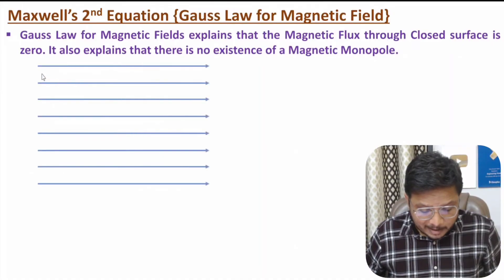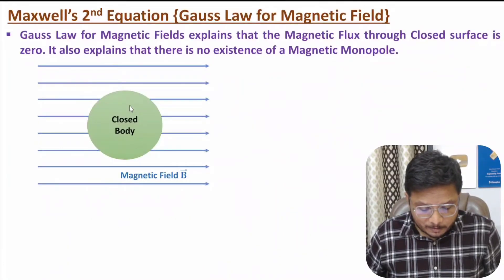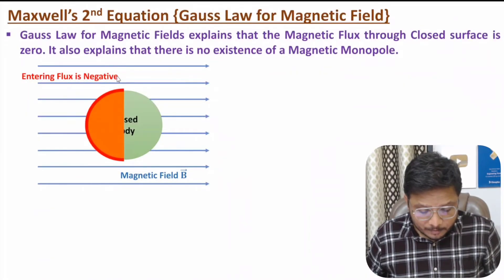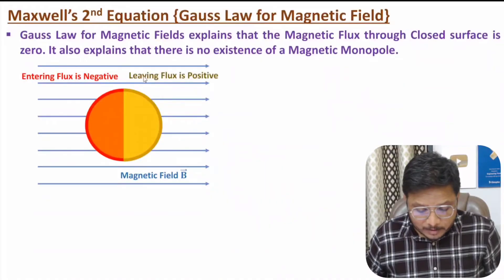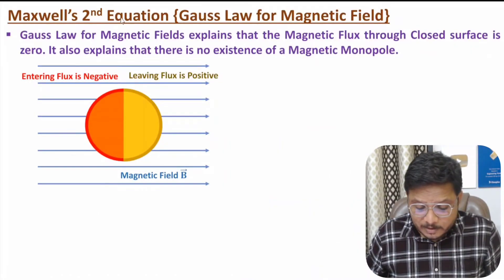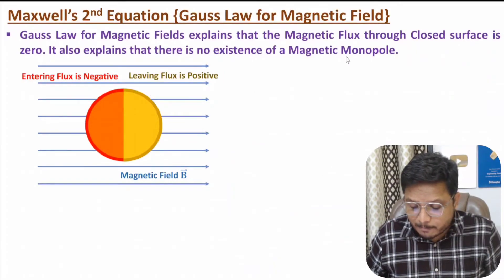If you have a magnetic field acting on a closed body, then through that closed body, total magnetic flux will be zero. The magnetic field lines entering the body represent negative flux, and the magnetic field lines leaving the body represent positive flux, so the total flux through the closed body is zero. Maxwell's second equation, based on Gauss's law for magnetic field, states that for a closed surface, magnetic flux is zero, meaning there is no existence of a magnetic monopole. There will always be north and south poles together, and magnetic field lines always exist in an enclosed loop, emerging from the north pole and enclosing to the south pole.